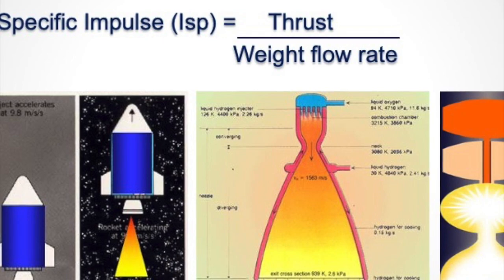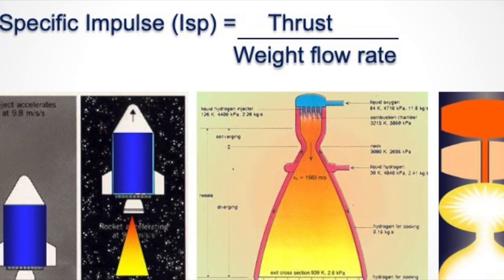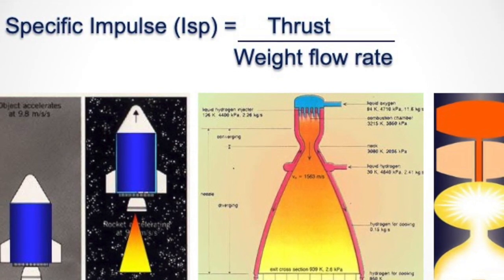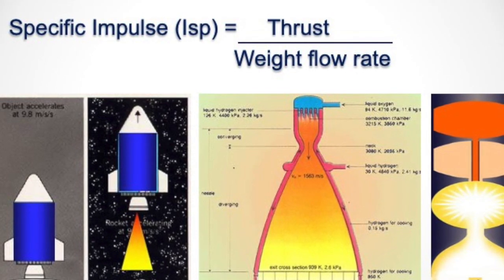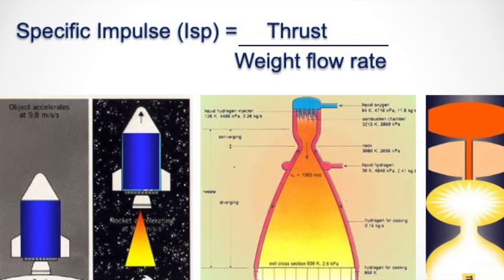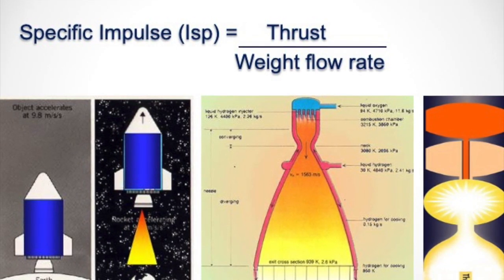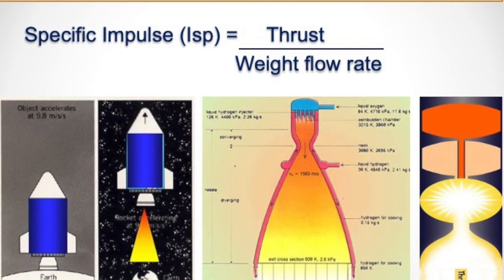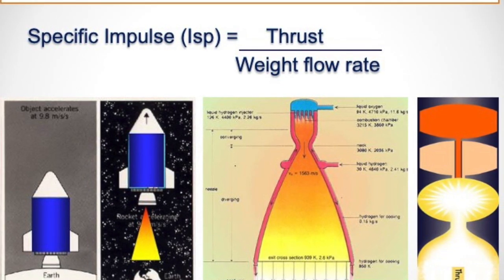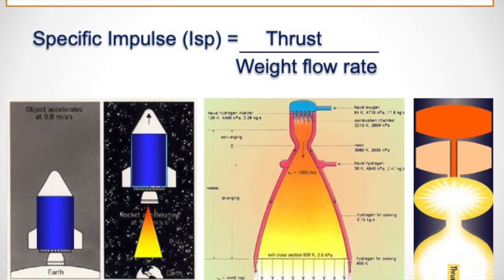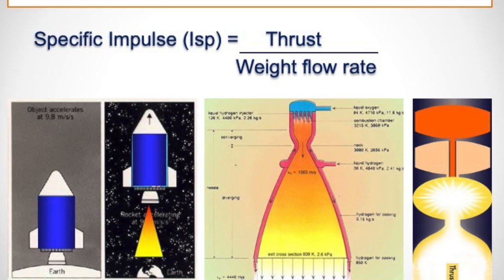Next is specific impulse, or the mileage of a rocket. When you purchase a car or bike, you think about its mileage. In the same way, the efficiency or performance of the rocket is called specific impulse. The specific impulse of a solid propellant is 240 to 250 seconds, liquid propellant is 330 to 350 seconds, and cryogenic propellant is 420 to 440 seconds.